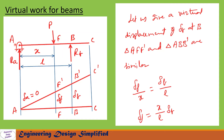First, let us take beam AC. At A it is hinged. A load P is acting vertically downwards, and there is a reaction at B due to the roller of the other beam, Rb, acting upwards. Now let us give a virtual displacement of delta_B at B, so the beam will assume the position A, F prime, B prime, and C prime.